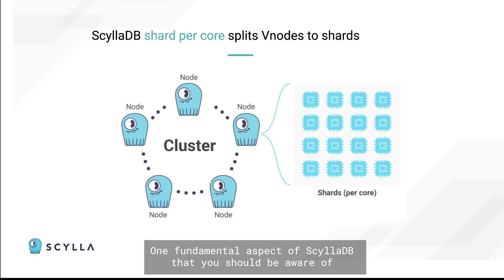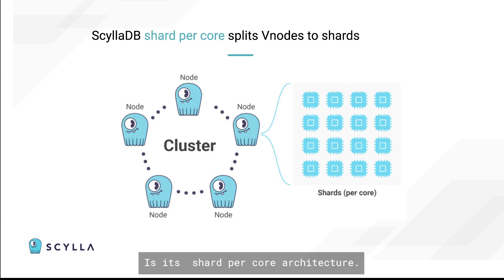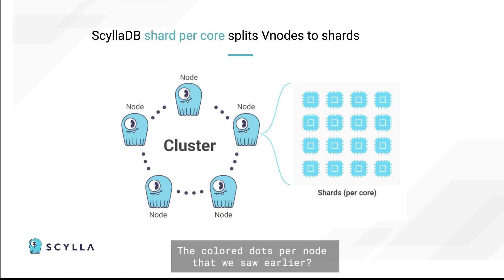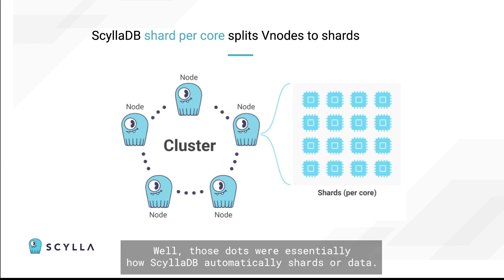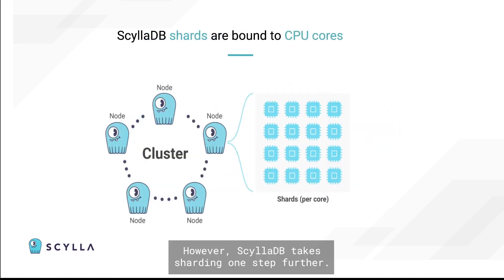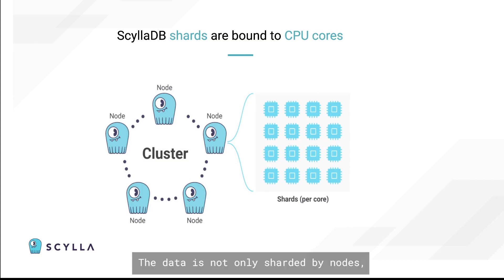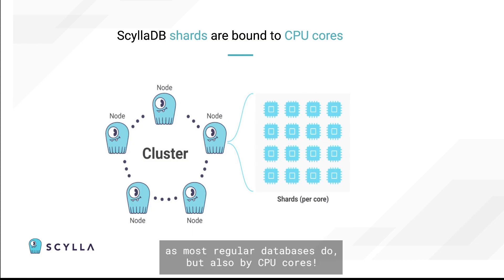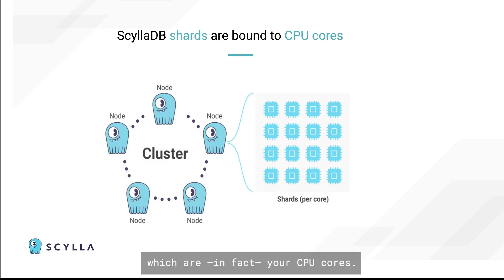One fundamental aspect of ScyllaDB that you should be aware of is its shard-per-core architecture. Remember the V-nodes, the colored dots per node that we saw earlier? Those dots were essentially how ScyllaDB automatically shards your data. However, ScyllaDB takes sharding one step further. The data is not only sharded by nodes, as most regular databases do, but also by CPU cores. This means that every V-node is broken down into shards, which are, in fact, your CPU cores.